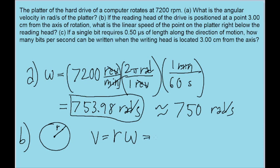The problem tells us that the reading head of the drive is positioned at three centimeters from the axis of rotation. So r in this case is going to be those three centimeters, or converting into meters, 3×10^-2 meters, since that's how we convert something from centimeters into meters. And then we multiply that by the angular velocity which we found in part A.